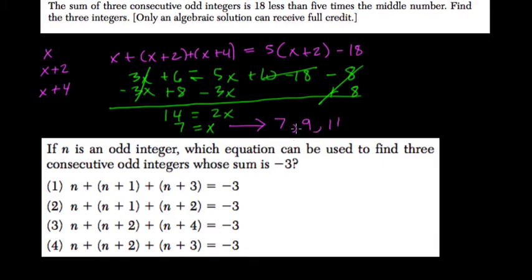If we take 5 times the middle number, that's 5 times 9, or 45. So 5 times 9 equals 45. And if we subtract 18 from 45, what do we get? Well, minus 10 is 35, minus 8 is 27.